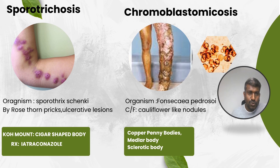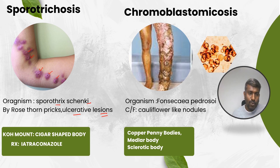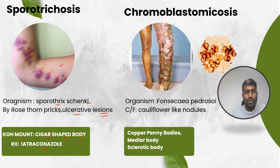Sporotrichosis is caused by rose thorn pricks, as seen in the image. It leads to ulcerative lesions and is caused by Sporothrix schenckii, typically affecting rose gardeners. On KOH mount you will see cigar-shaped bodies. Treat with itraconazole — very important.